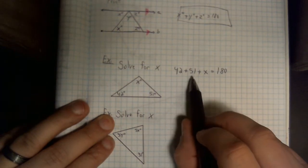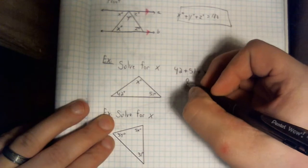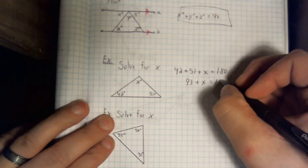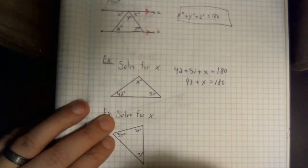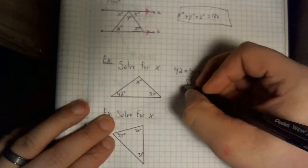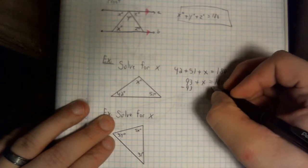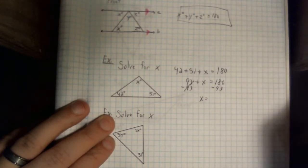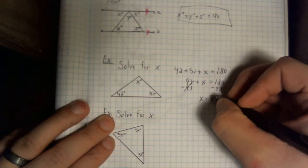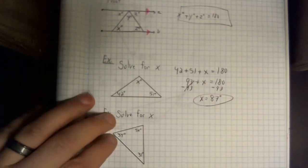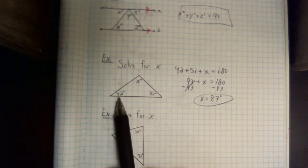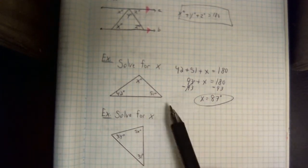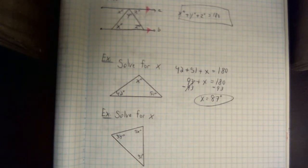Let's combine like terms. 51 and 42 gives us 93. Haven't done anything with that x yet, and it's still equaling to 180 degrees. Let's just subtract away the 93. That's going to leave us with 87 degrees. So if we check 42, 51, and 87 when we add those all together, it's going to come up with 180, which is exactly what we're looking for.